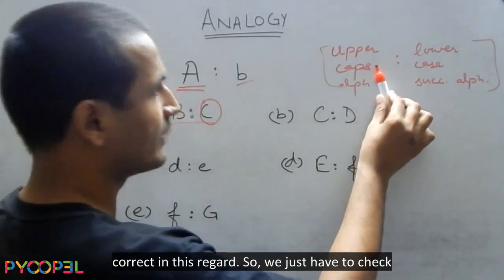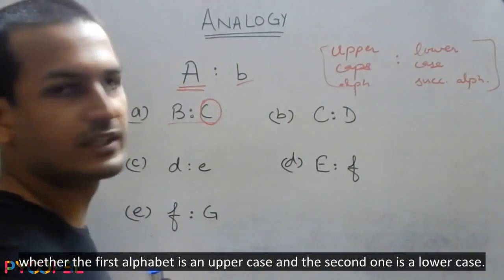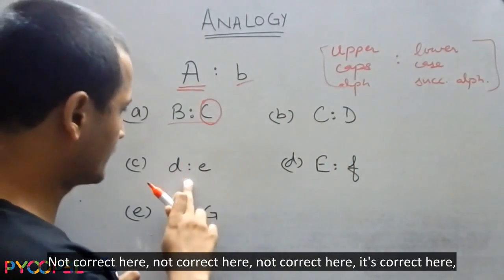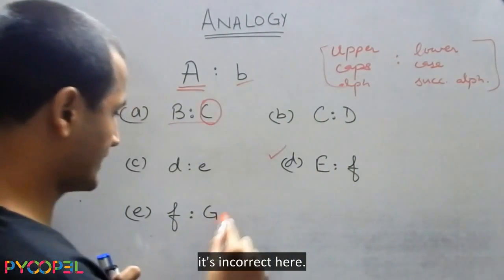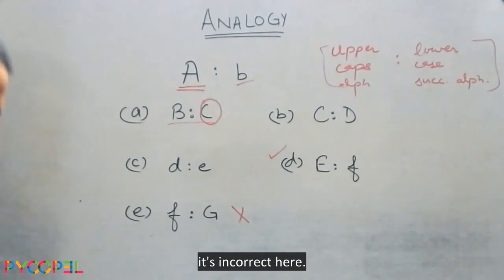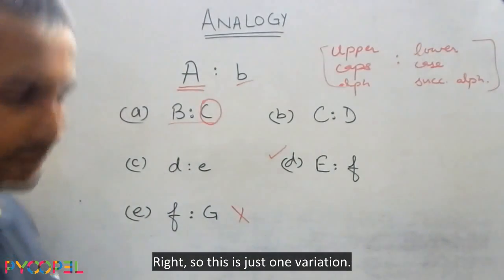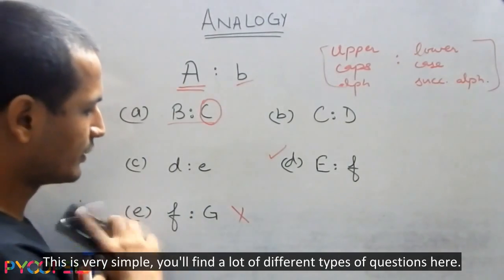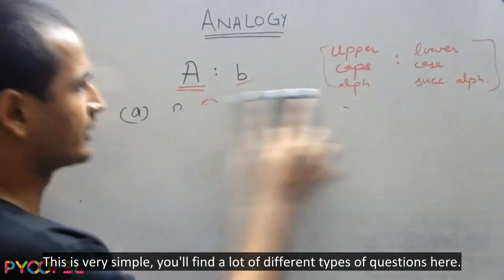So, we just have to check whether the first alphabet is in upper case and the second one is in lower case. Not correct here, not correct here, not correct here, it's correct here, it's incorrect here. Right. So, this is just one variation, this is very simple. You will find a lot of different types of questions here.